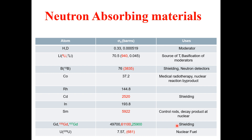Uranium, and most prominently its isotope uranium-235: natural uranium has an absorption cross-section of 7.57 barn, while uranium-235 has a cross-section of 681 barn. Uranium is primarily utilized as nuclear fuel. This covers all the neutron absorbing materials presented in this table, including their cross-sections and uses.